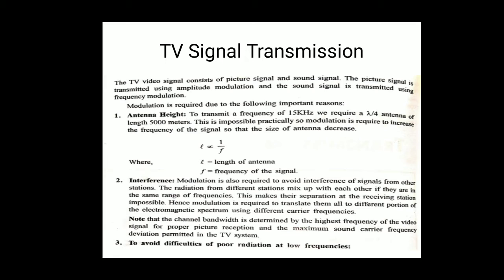The second reason is interference. Modulation is also required to avoid the interference of the signal from other stations. The radiation from different stations mixes up with each other if they are in the same range of frequency - a cross-talk problem is generated, making their separation at the receiving stations impossible. Hence, modulation is required for translation to different portions of the electromagnetic spectrum using different carrier frequencies.